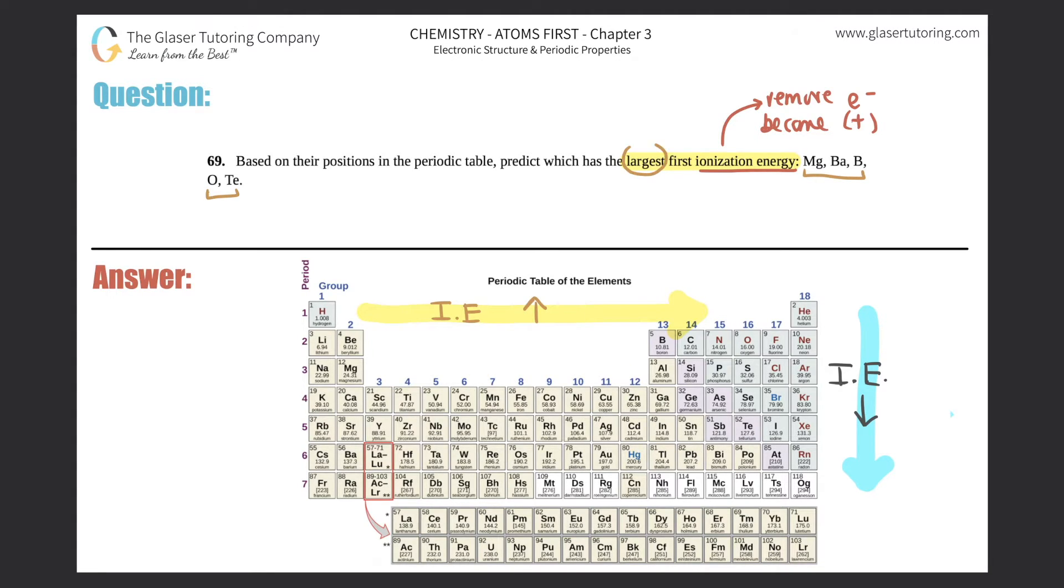Now let's just put these elements on the periodic table and see which one has the largest first ionization energy. And first just means that you're losing the first electron. If they said second ionization energy, that means you already lost one electron, you're losing the second one. Okay, so let's see: Mg magnesium, we got barium which is over here, we got boron which is over here, oxygen, and tellurium I believe is over here.